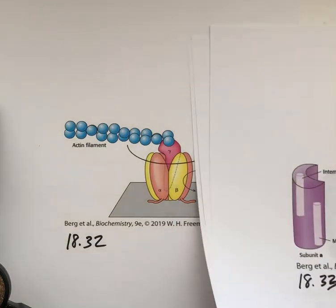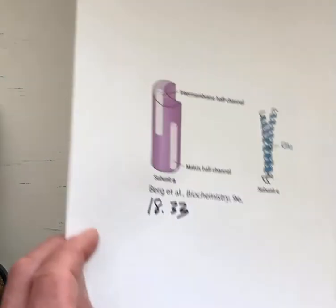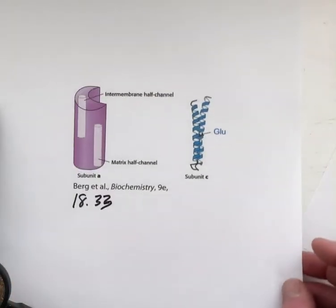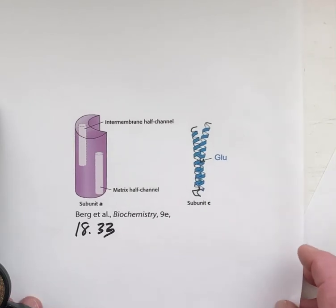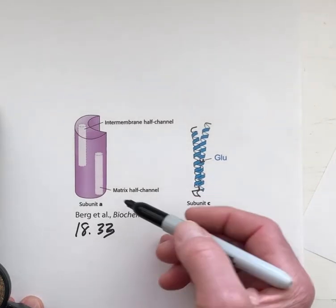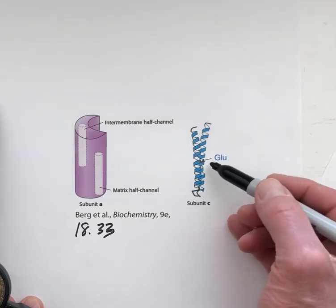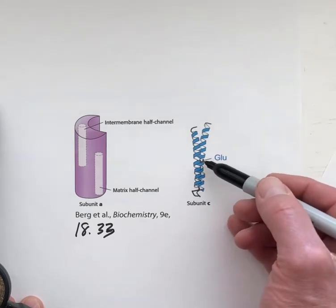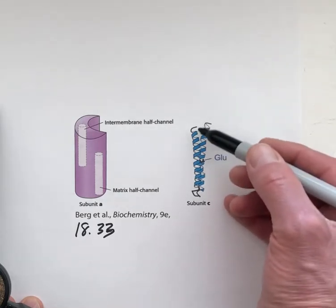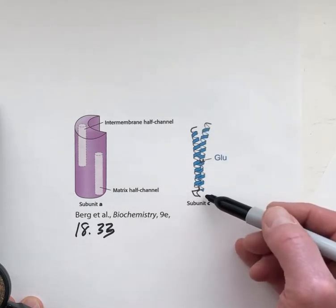Finally, we're going to take a look at the path of the protons. The path of the protons explains why the gamma subunit is rotating. It is a combination of this A subunit and the C subunit. The C subunit has a glutamate residue right about midway along one of the transmembrane helices.